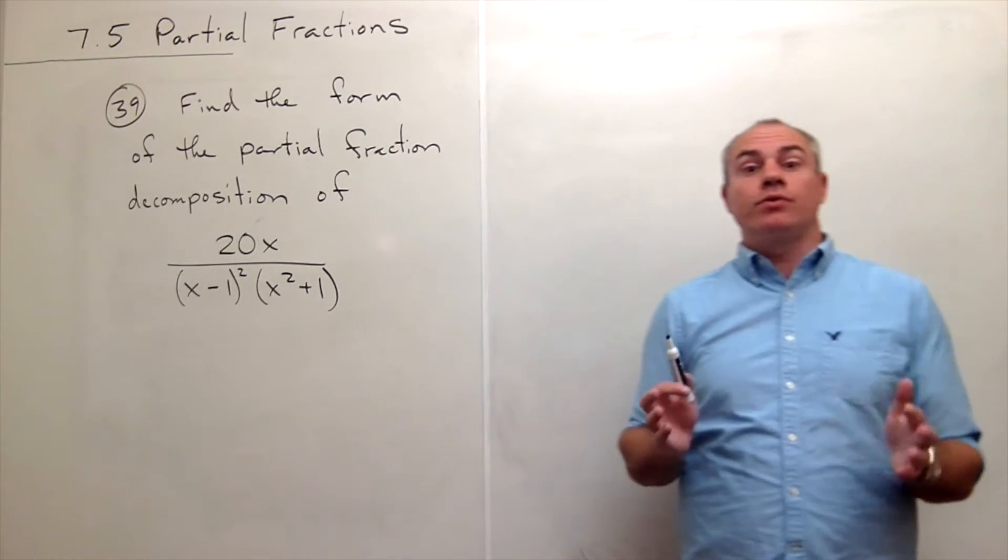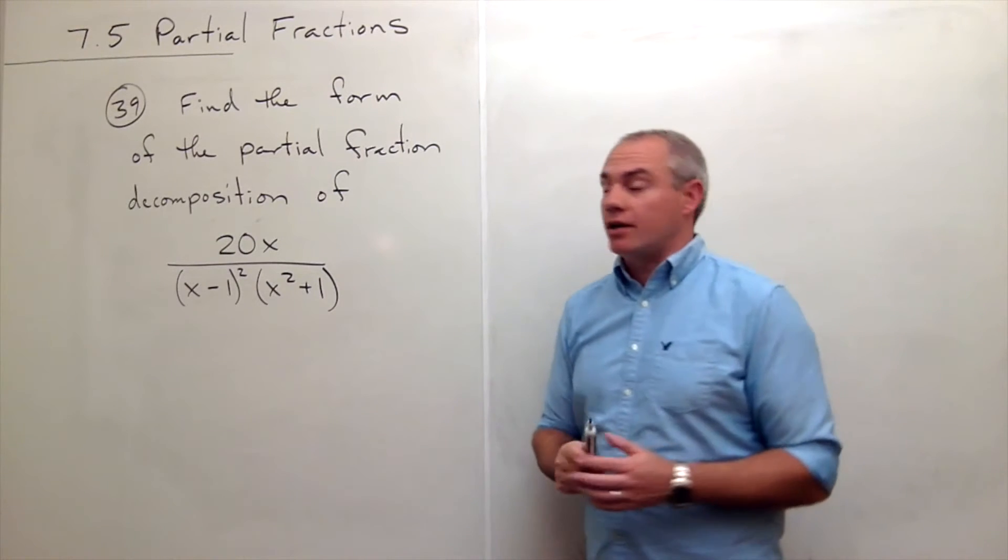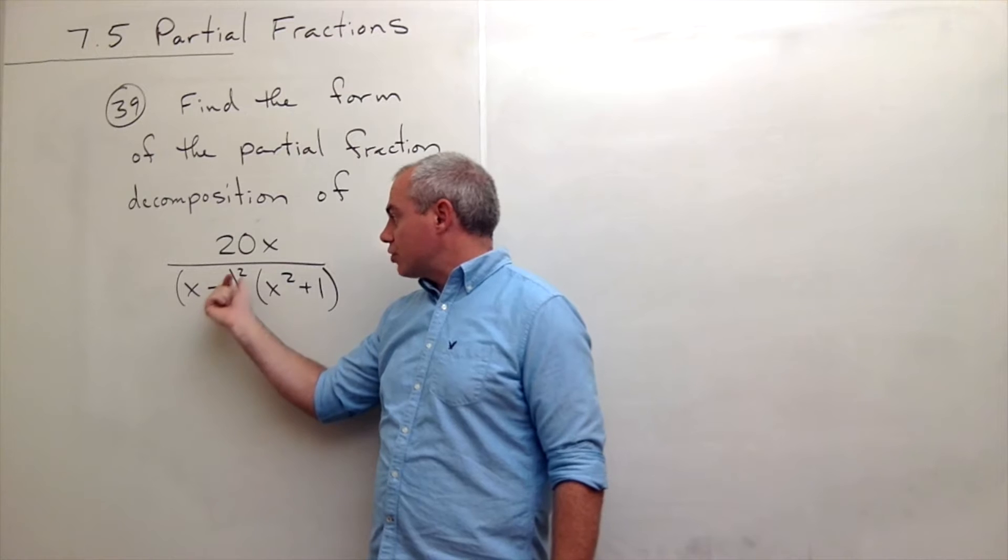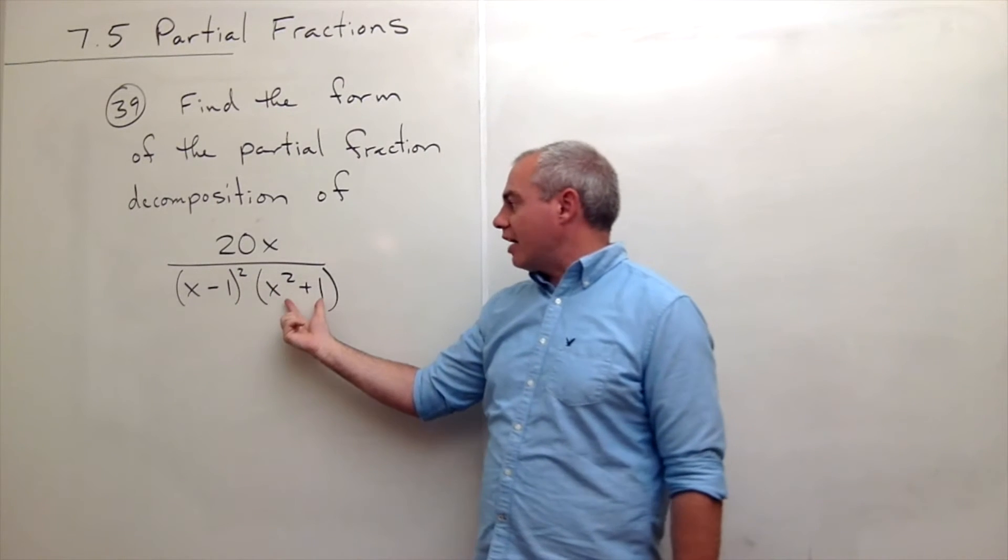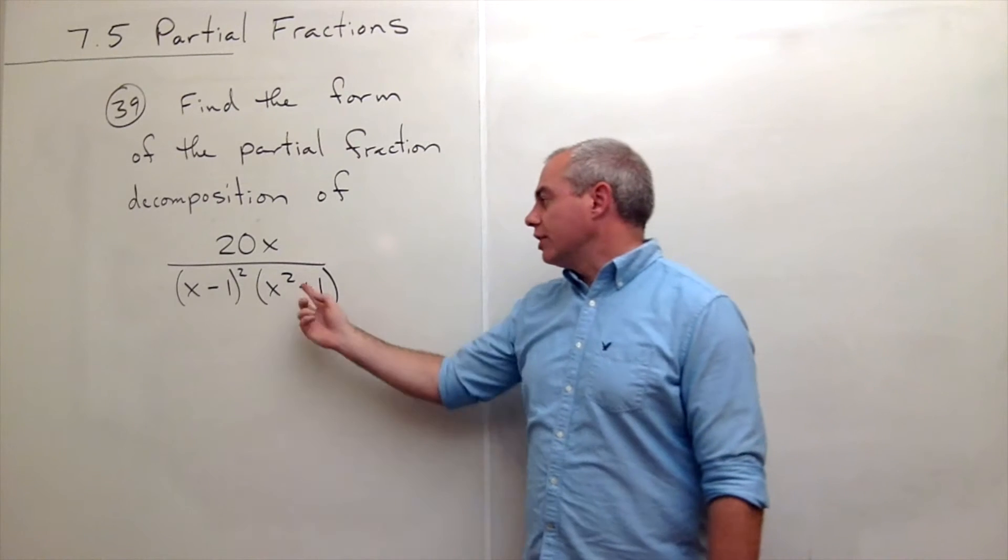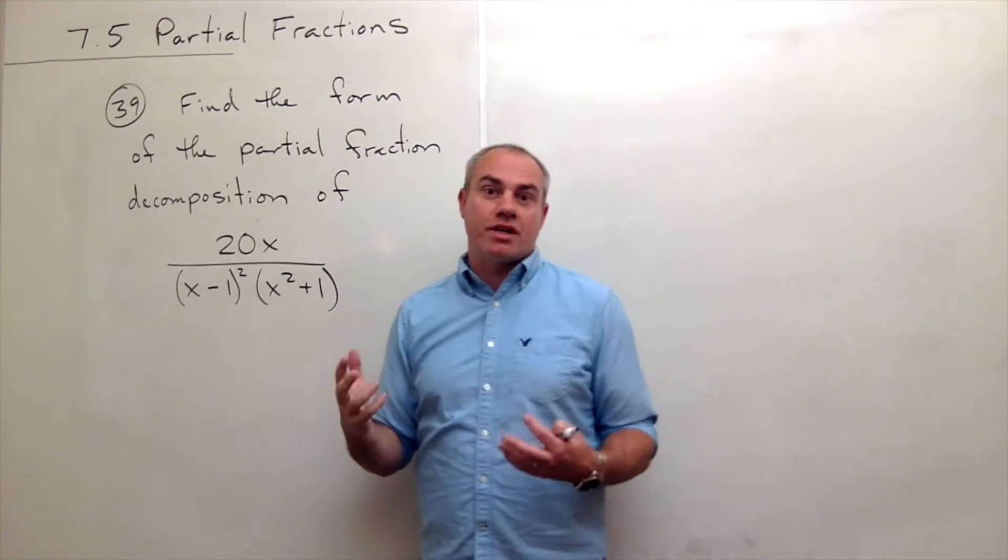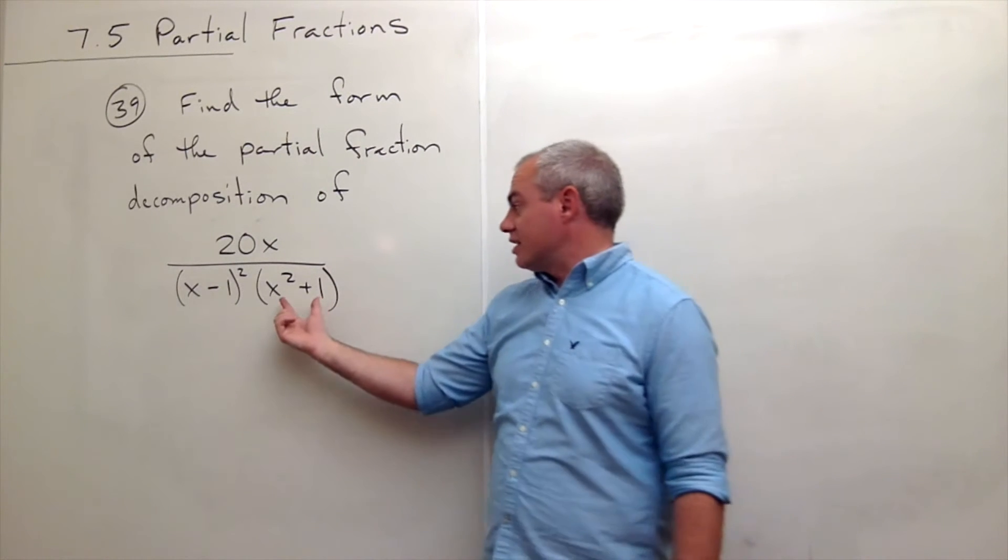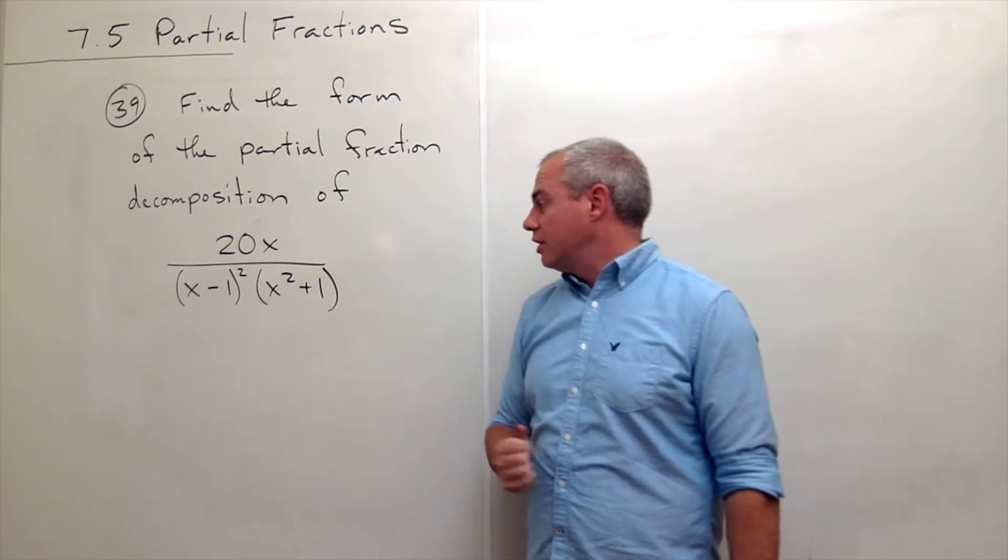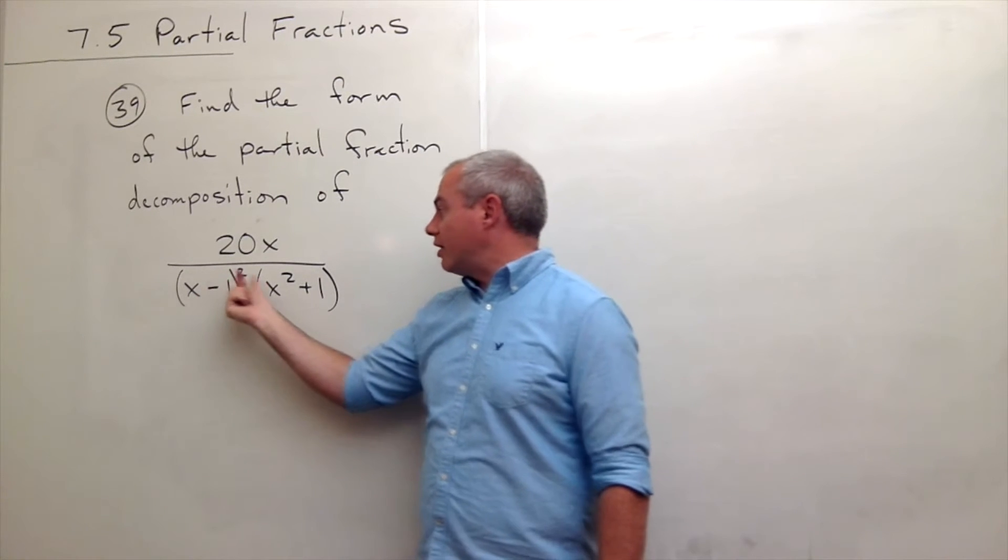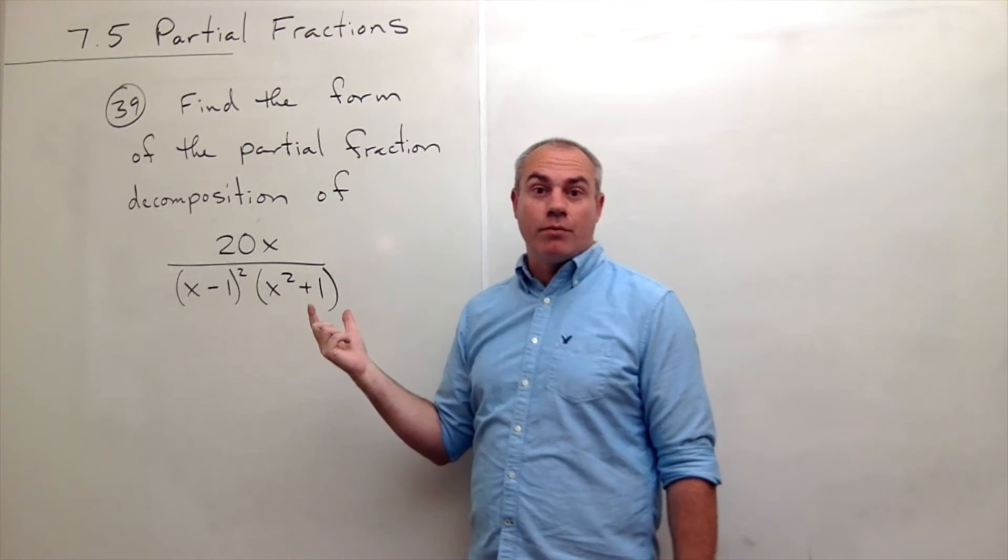So we've got two interesting things going on here. If you look at the denominator, I've got a linear term squared, and then I've got this other term. This cannot be factored down. The only way I can factor this down further is using imaginary numbers, and we're not really doing that in calculus. This is an irreducible quadratic term. So I've got a linear squared and I've got an irreducible quadratic.